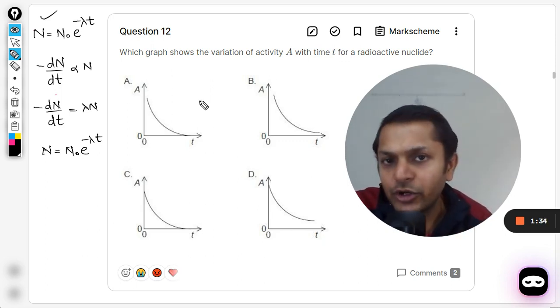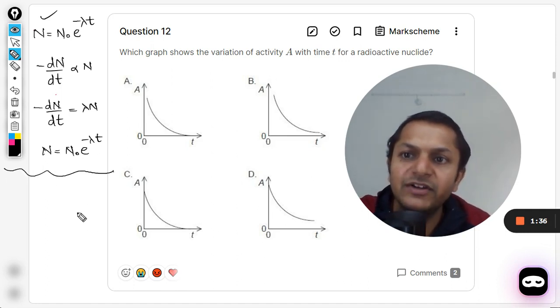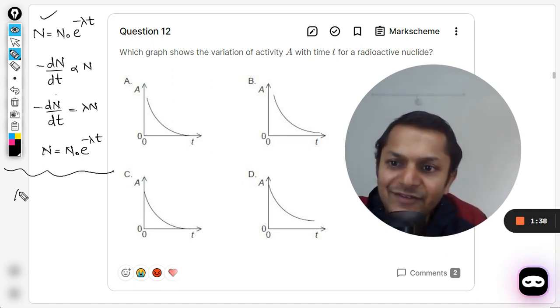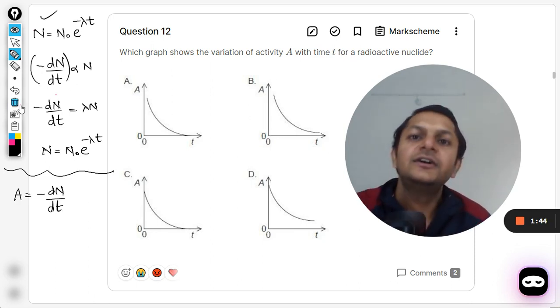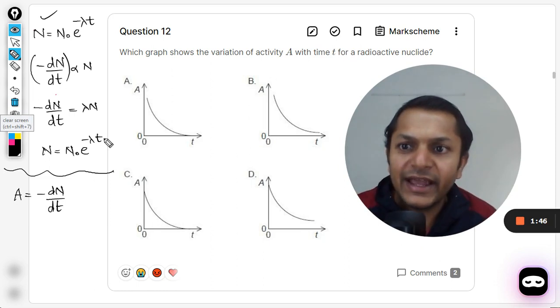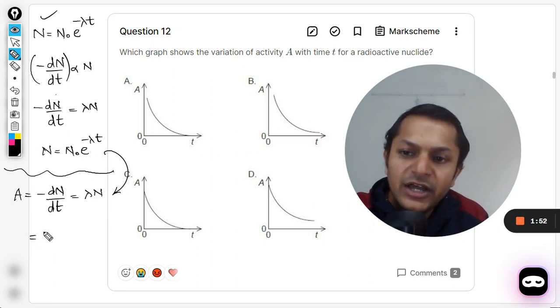But we want to talk about the activity. What is activity now? Activity A is defined as negative dN by dt. So this very factor is written as capital A now, and this is equal to lambda N. So this value of N can be substituted here.